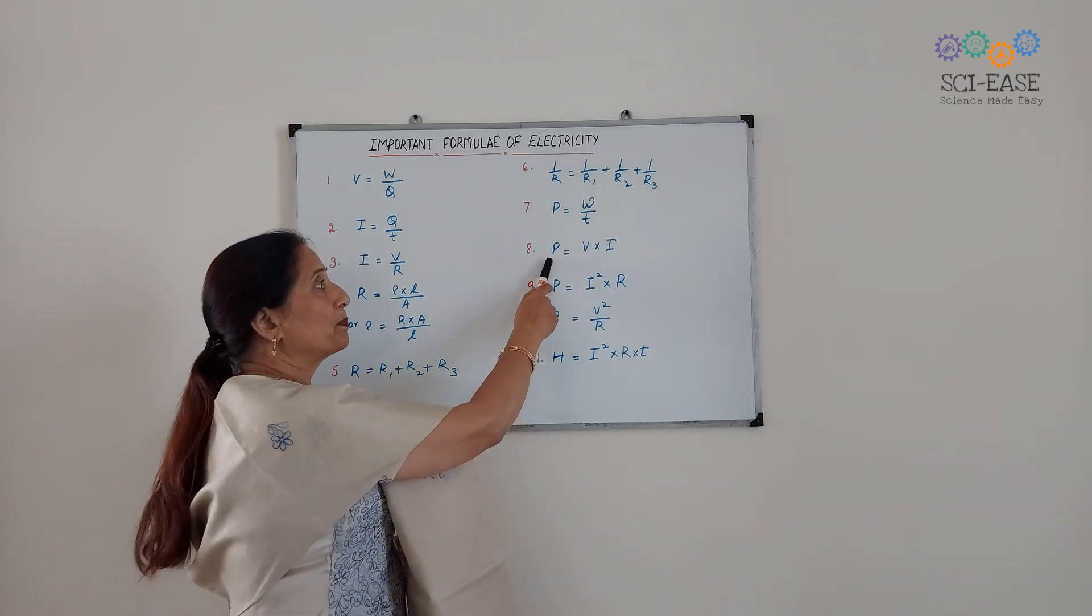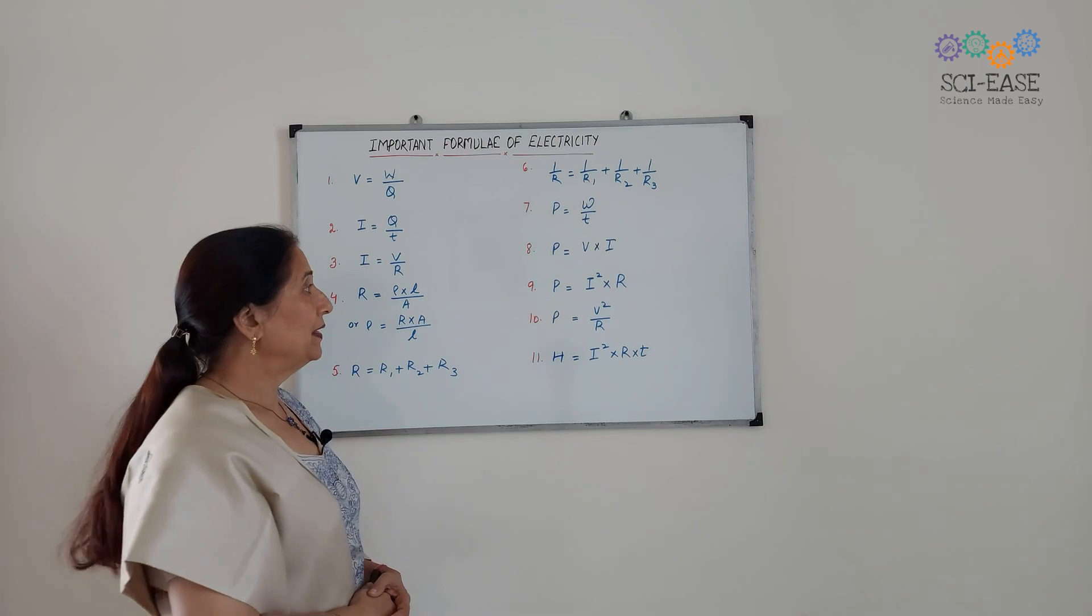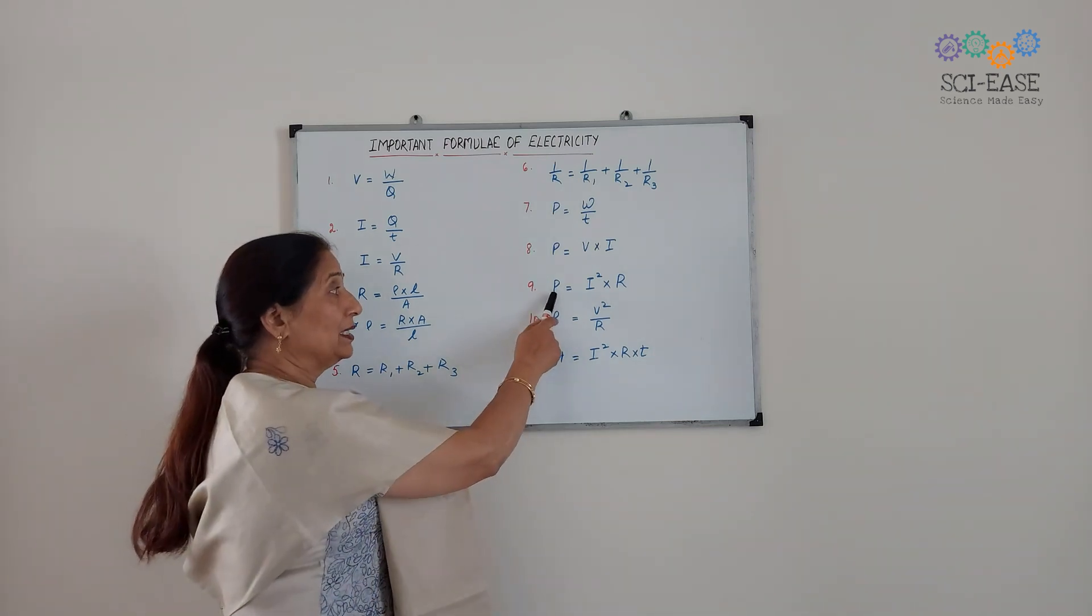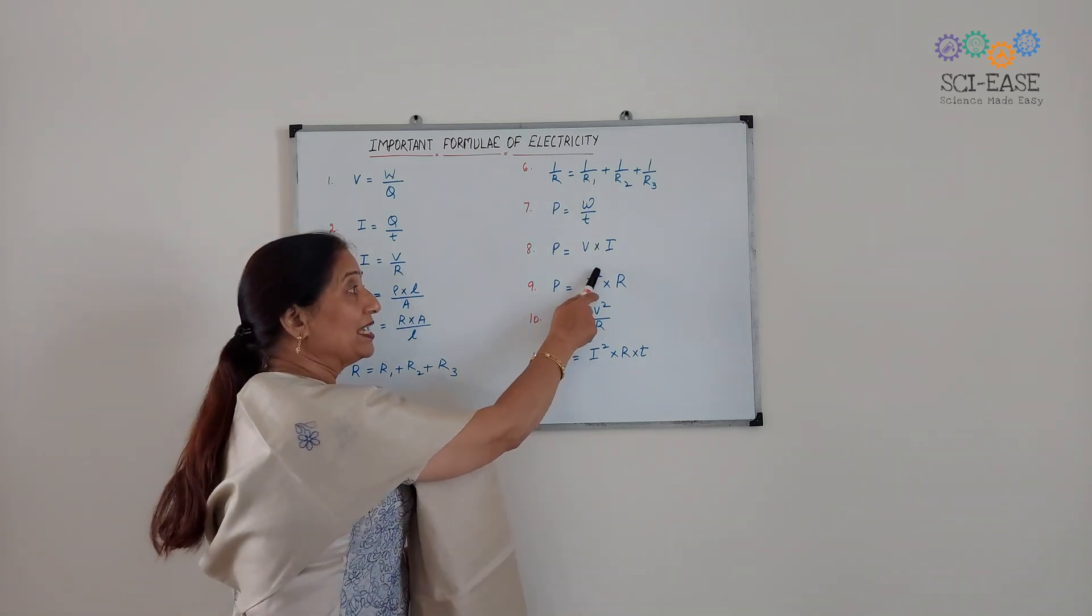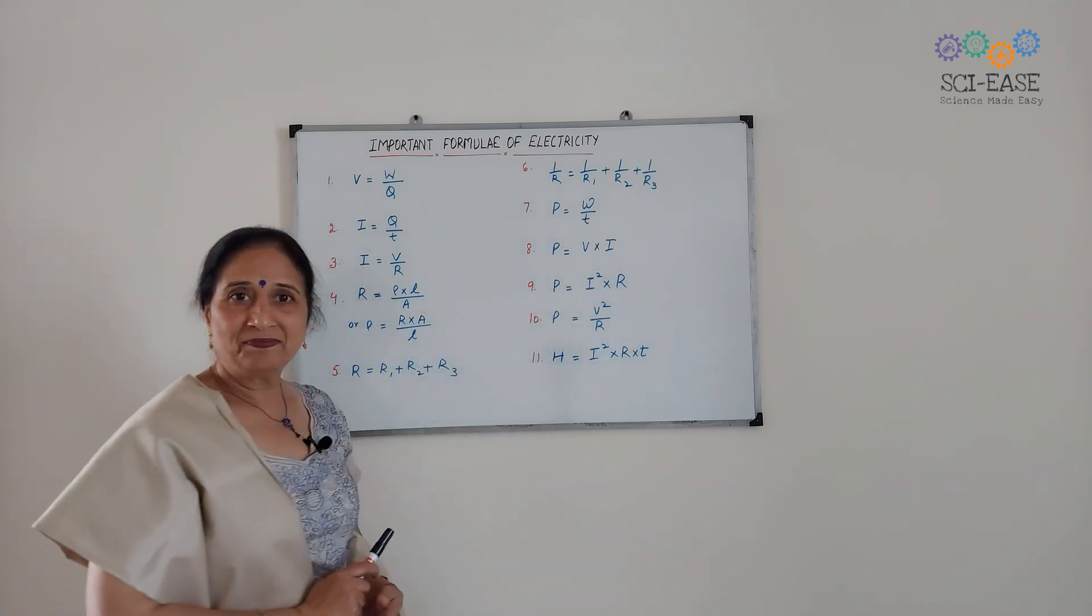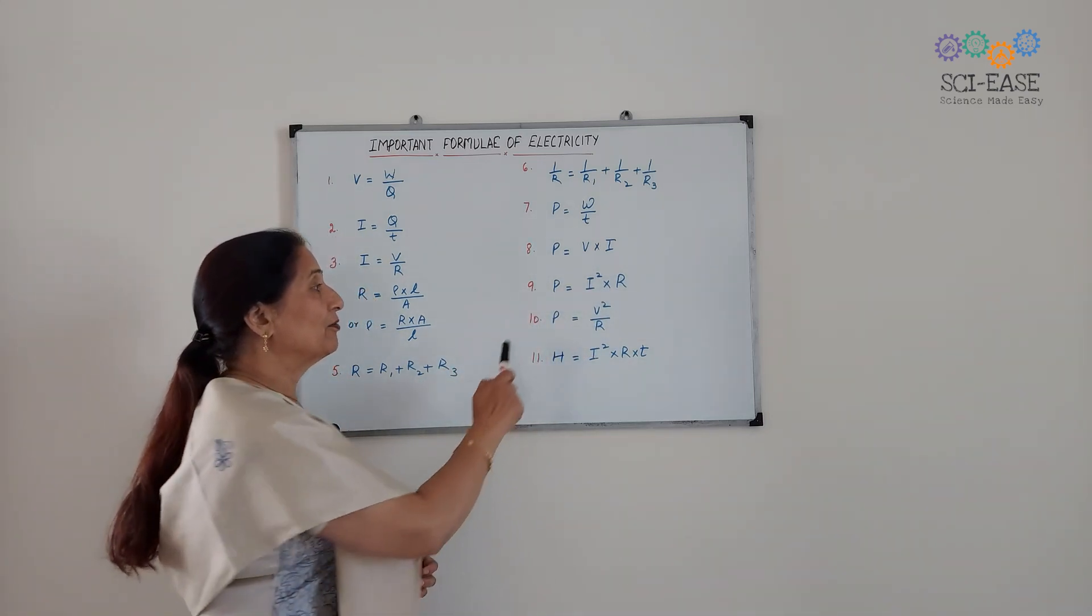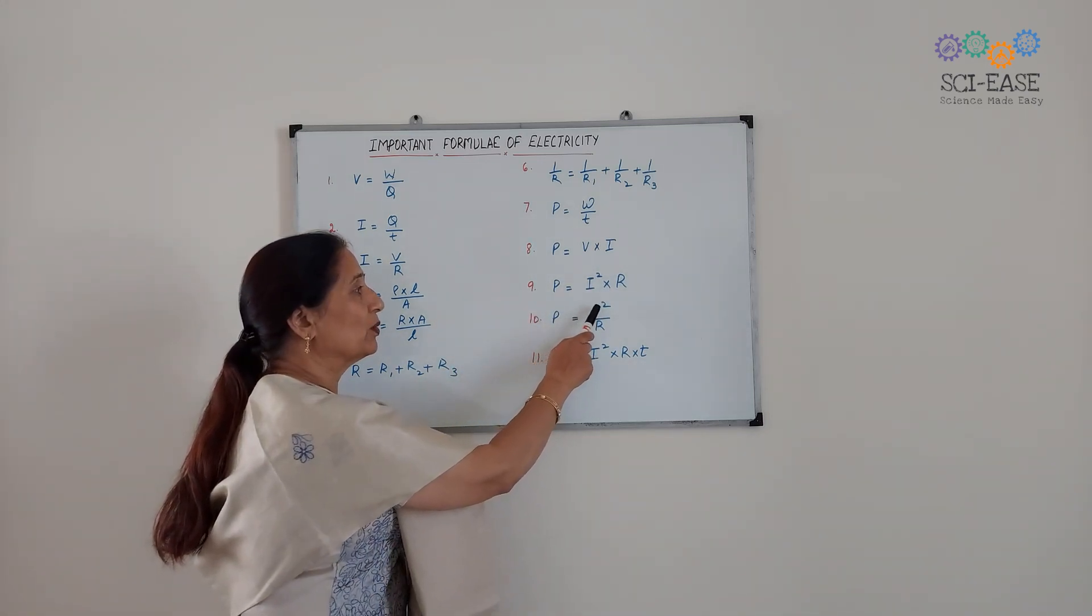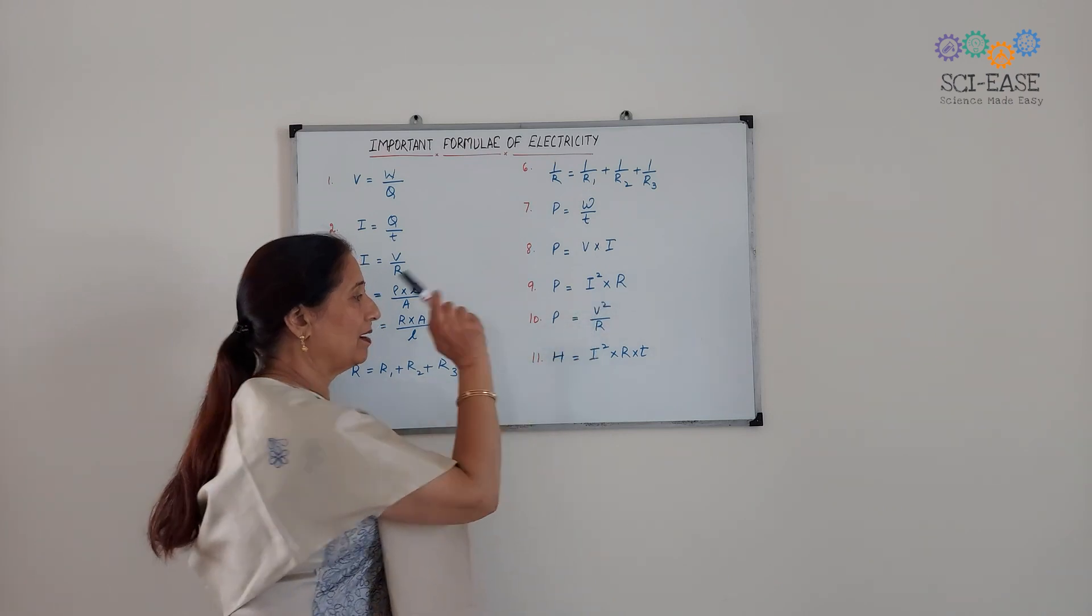Next is P equals V into I. Third one, P equals I squared into R. And the fourth one is P equals V squared over R.